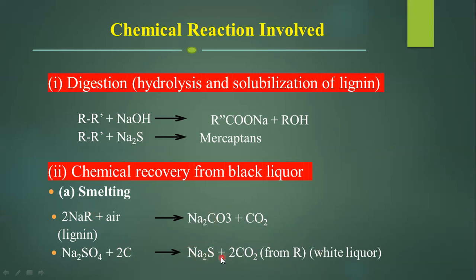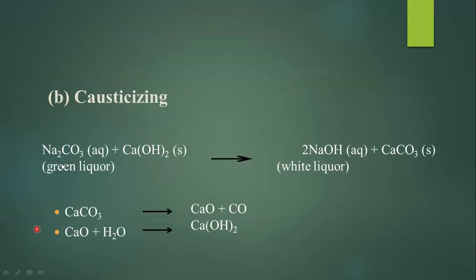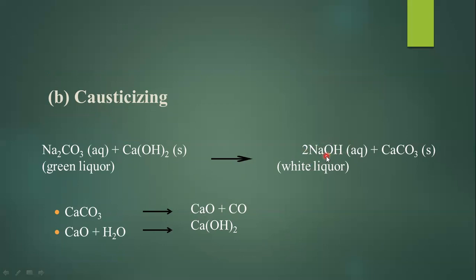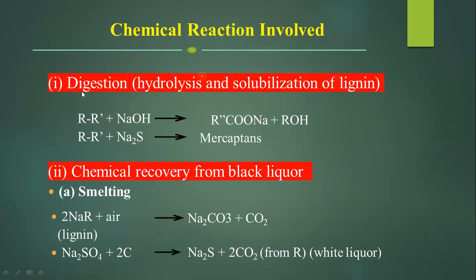The second reaction is chemical recovery from the black liquor. From the smelting process we recover sodium carbonate (Na2CO3) and sodium sulphate. Na2CO3 is also known as white liquor. The next reaction is causticizing: aqueous Na2CO3 reacts with solid calcium hydroxide to give sodium hydroxide as aqueous white liquor and solid CaCO3. The CaCO3 then gives calcium oxide and CO2, and the calcium oxide reacts with water to give calcium hydroxide. In this way, sodium carbonate, sodium sulphate, and sodium hydroxide are recovered as white liquor and can again be used as raw material for the digestion process.